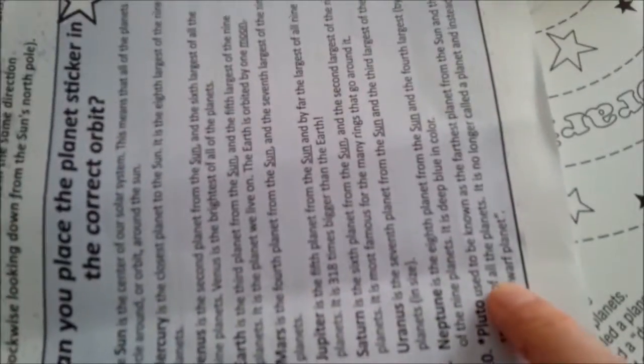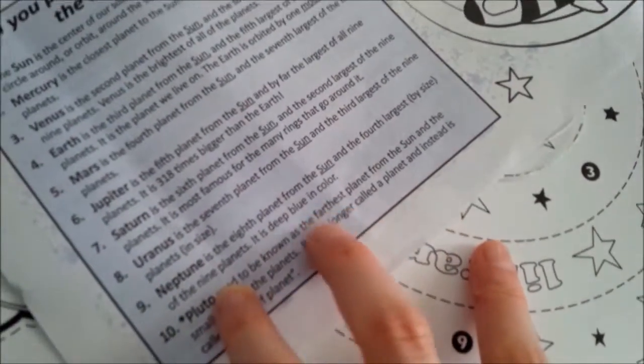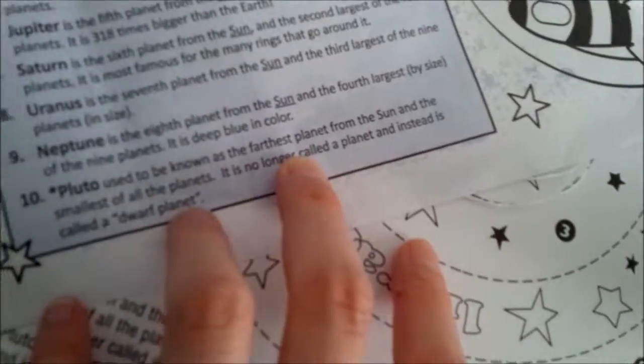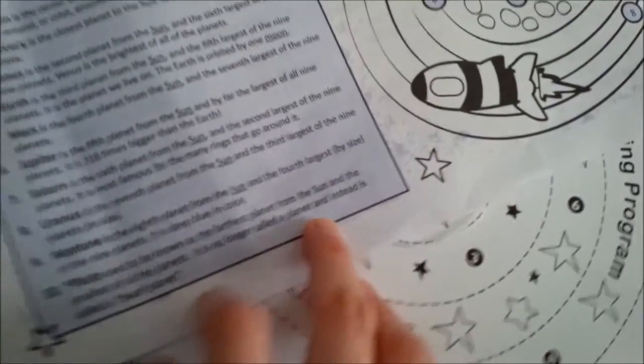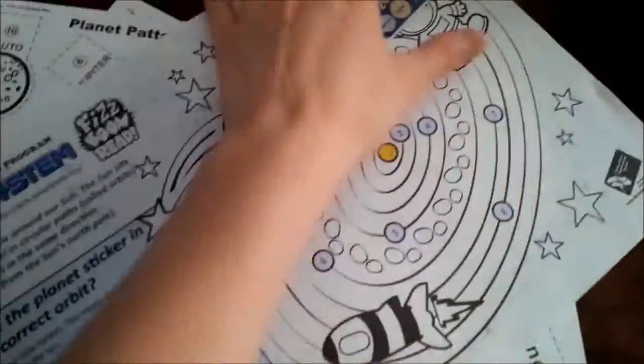It used to be known as the farthest planet from the Sun and the smallest of all planets, but it's no longer called a planet. Instead it's called a dwarf planet.